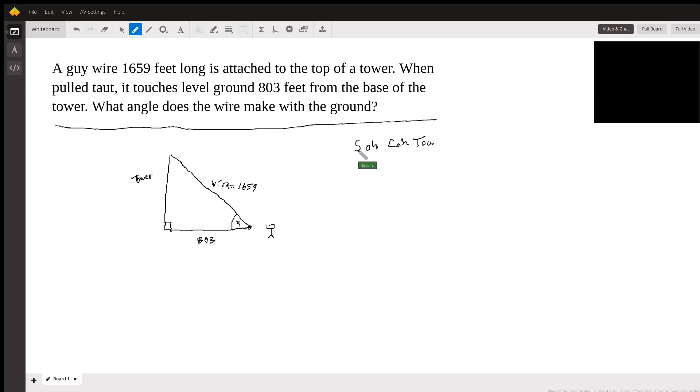We want to pick either sine, cosine, or tangent. And in this case, if you consider this to be the angle of interest x, we're given the adjacent and the hypotenuse. So it's going to be cosine, you can see.